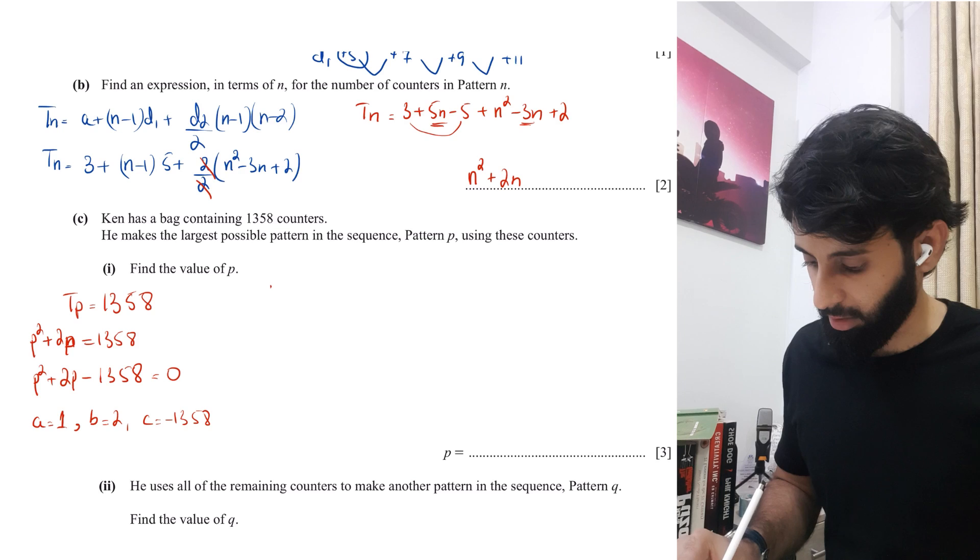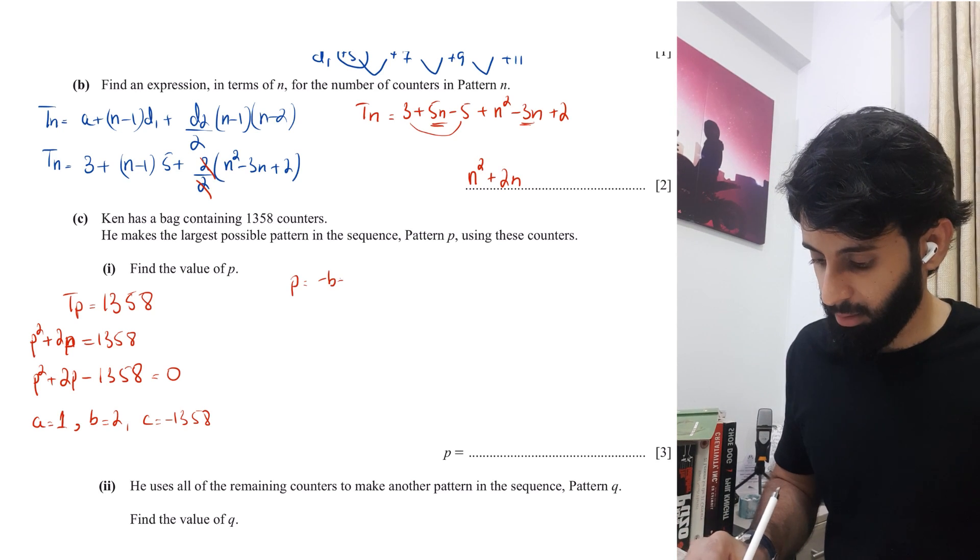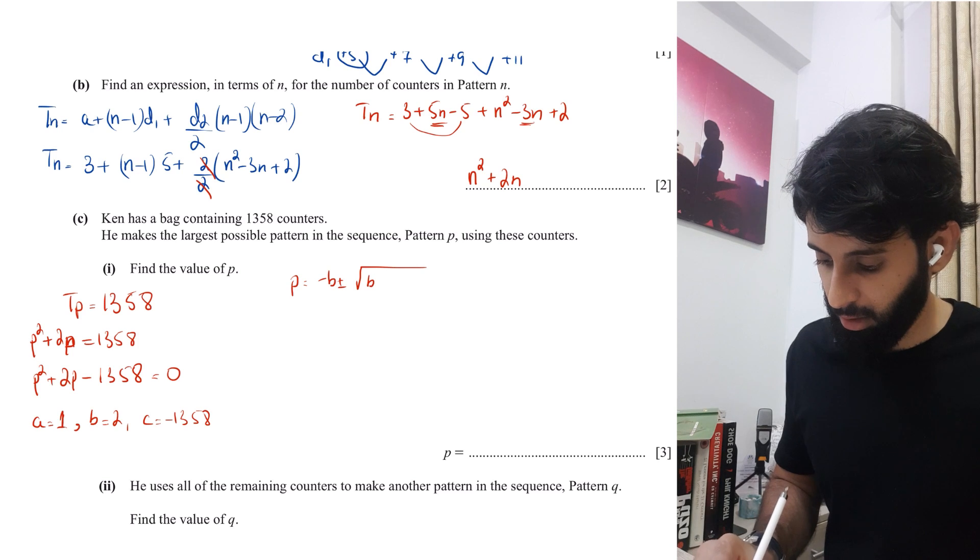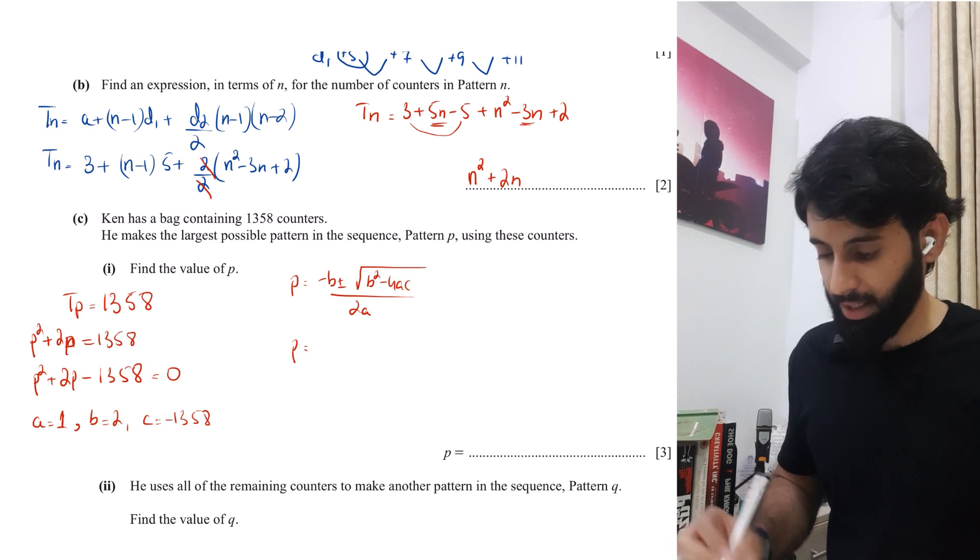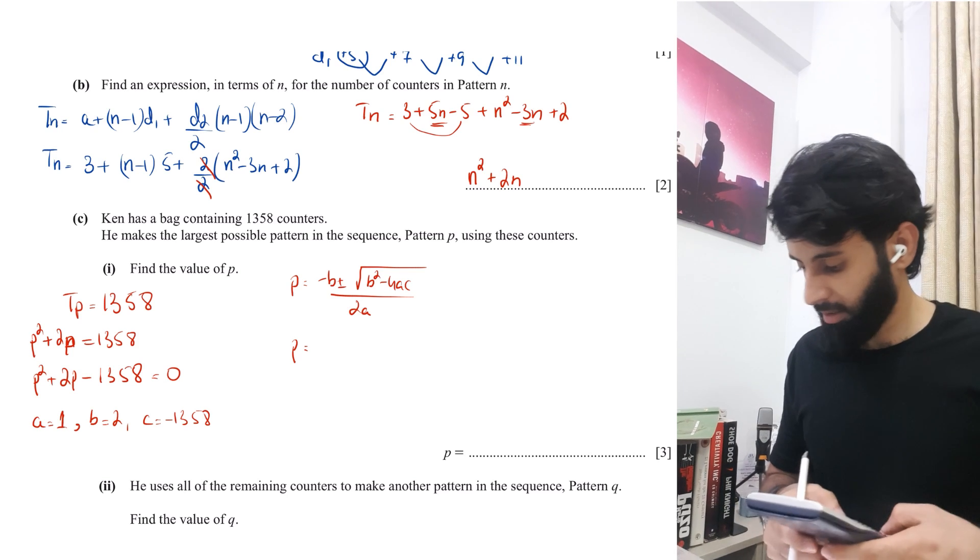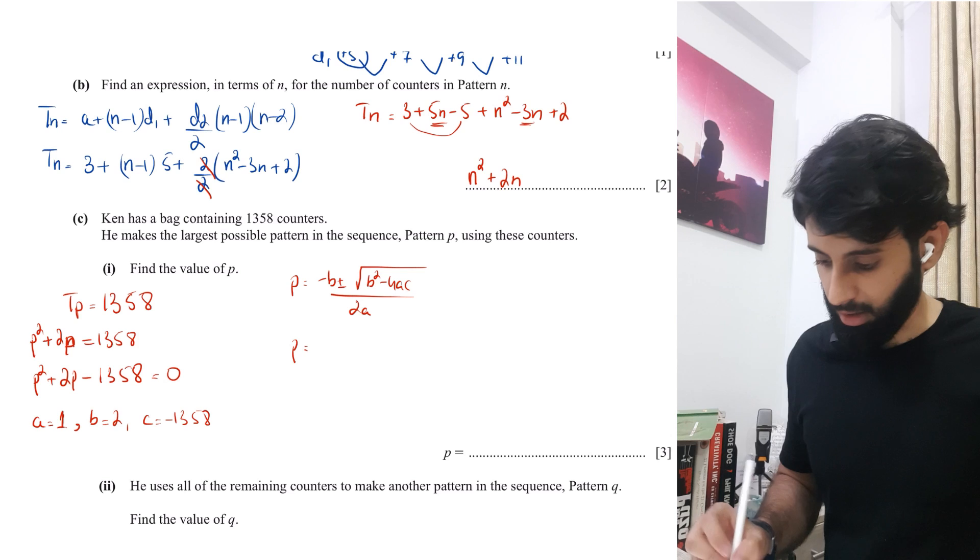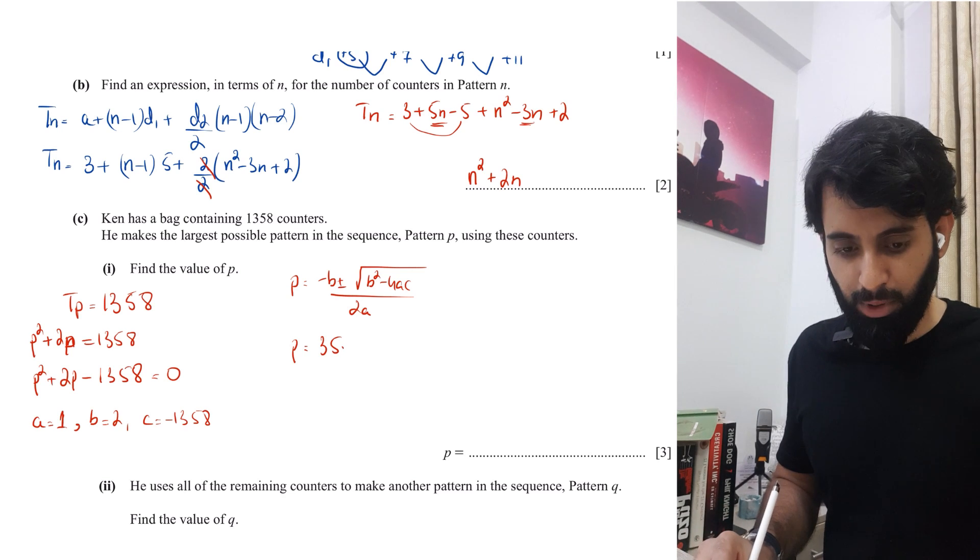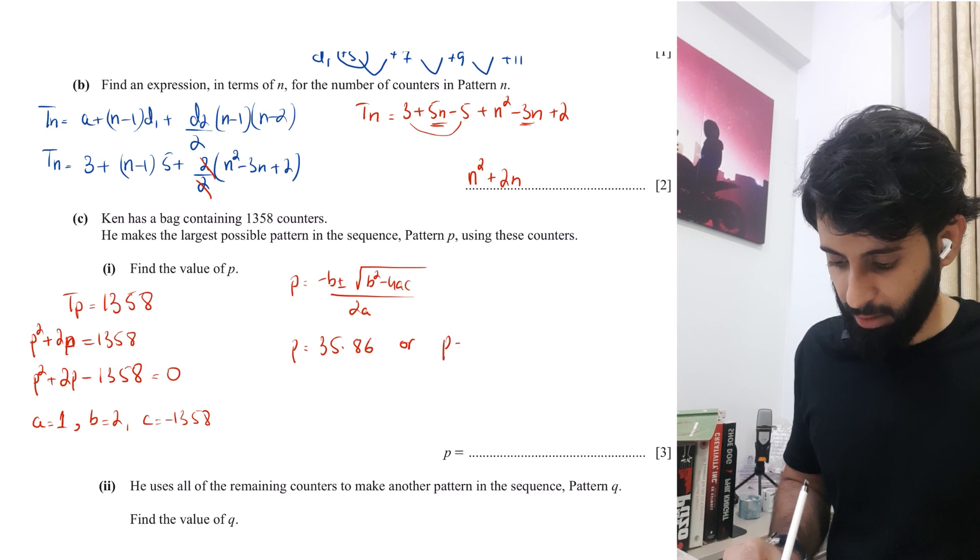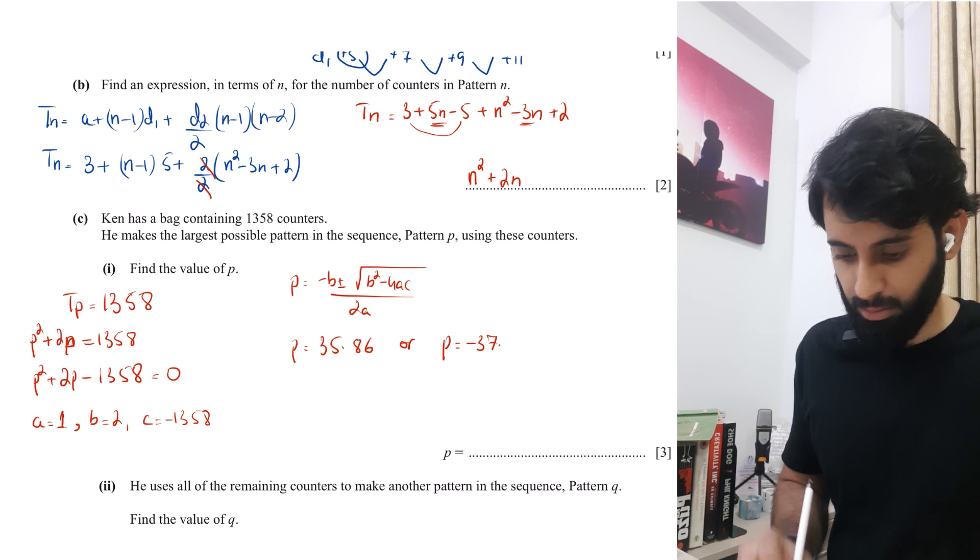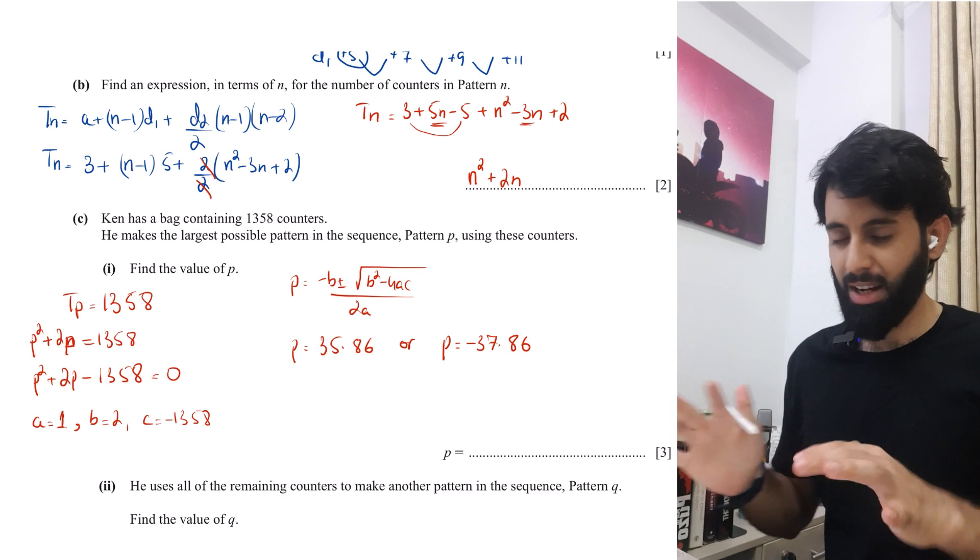So to save some time, I'm just going to use the calculator and solve it directly. Otherwise you'll have to use the quadratic formula, which is X equals to, in this case, P is equals to, minus B plus minus square root of B square minus 4AC upon 2A. Okay. So like I said, I'm going to save some time and I'm going to do it in my calculator directly. So one, two and minus 1,358. So what I get is one value is 35.86. So let's write this 35.86 or P is equals to minus 37.86.